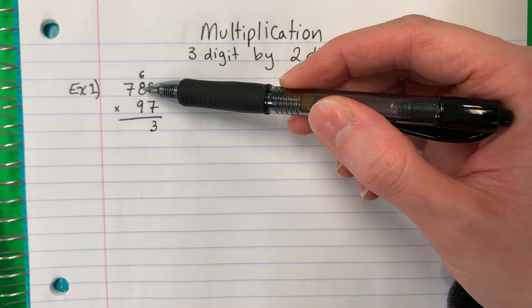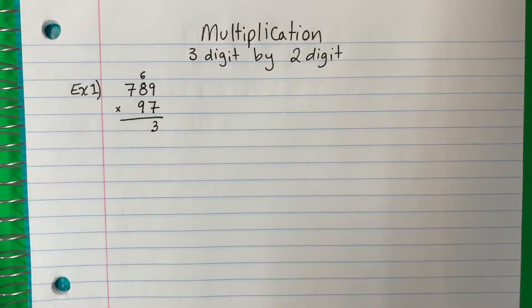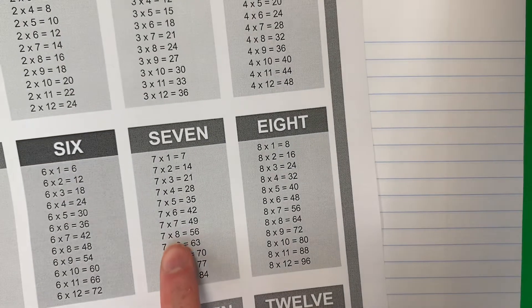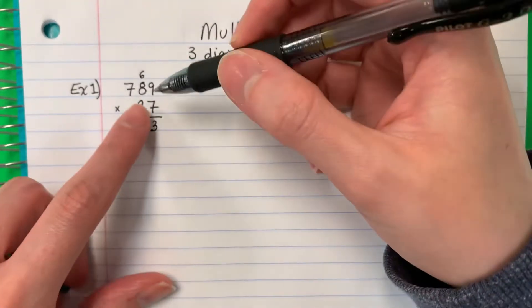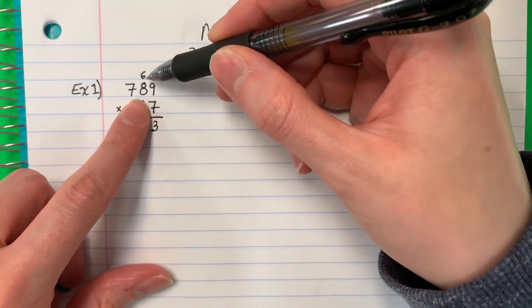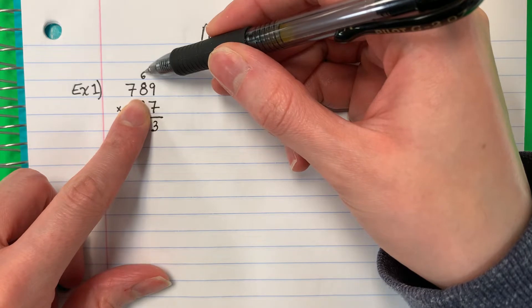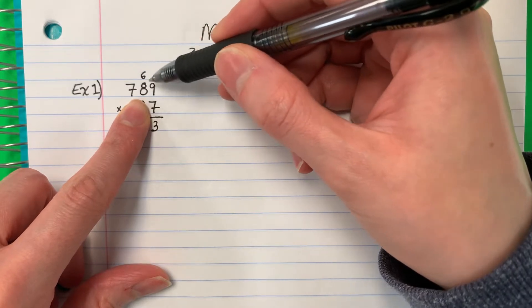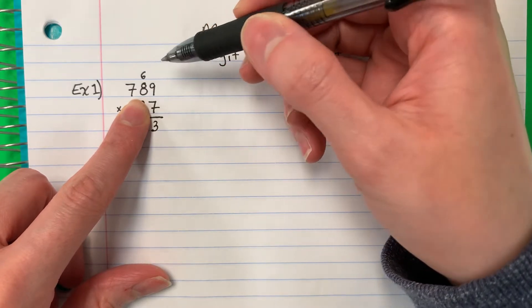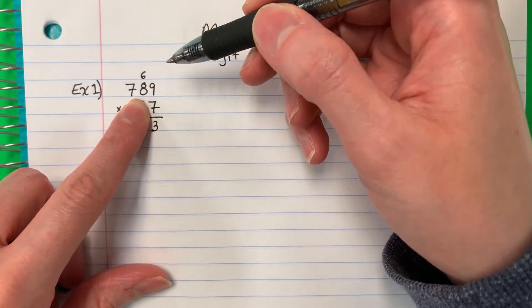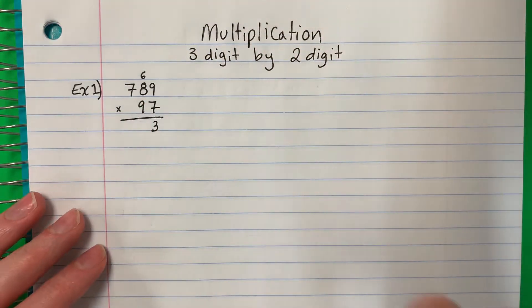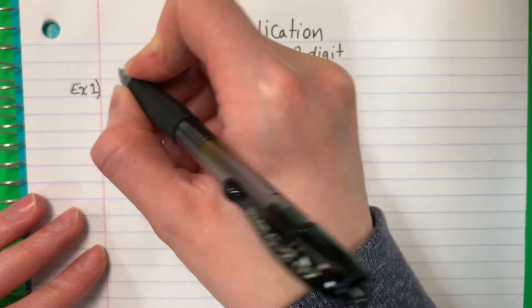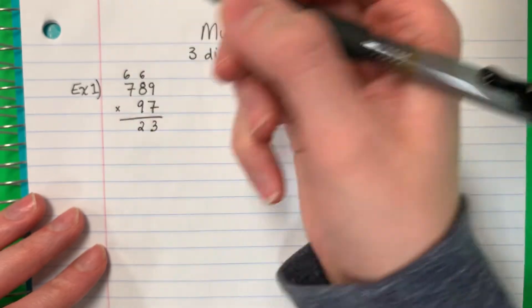Now seven times eight. Ahora siete por ocho. Seven times eight is 56. Cincuenta y seis. So we're going to go ahead and do 56 plus six. Cincuenta y seis más seis. 56 plus six is 62. Sesenta y dos. So you put the two here and the six here.